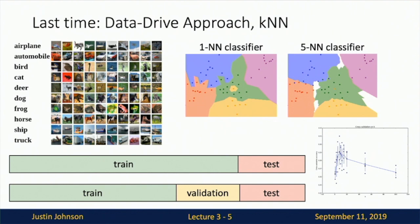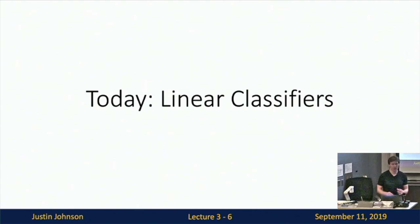We left off noting that the k-nearest neighbor algorithm is not very useful in practice for a couple of reasons: it inverted the idea of what is slow and fast — very fast to train but very slow to evaluate — and it wasn't perceptually meaningful, since L2 Euclidean or L1 distances on raw pixel values are not perceptually meaningful.